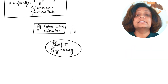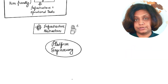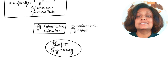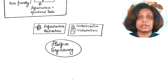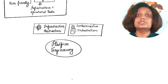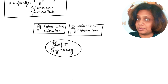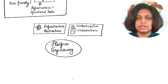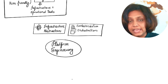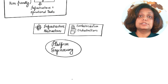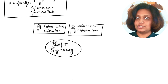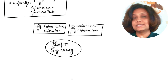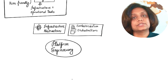Next is containerization and orchestration. A crucial part of platform engineering is implementing containerization technologies like Docker and orchestration platforms such as Kubernetes. Platform engineers design and maintain the container ecosystem, including the image registries, the management of those registries, and deployment strategies.